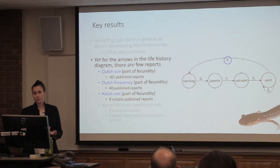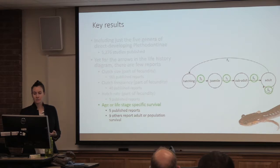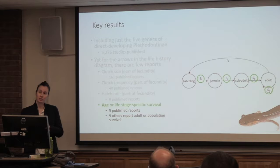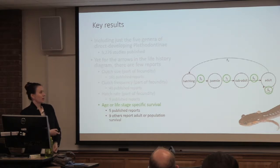Clutch frequency, which is also part of fecundity, is fairly well reported with 40 published reports. But for hatch rate we only have nine reliable published reports. And when you get into age or stage-specific survival, we only have five published reports that give specific survival rates for each size class. Otherwise we have nine reports that give either only adult survival or a population-level survival estimate, and those are not very useful when trying to understand the actual dynamics happening in the population.